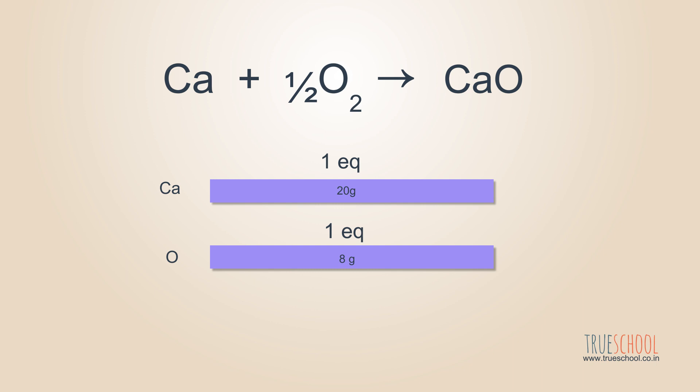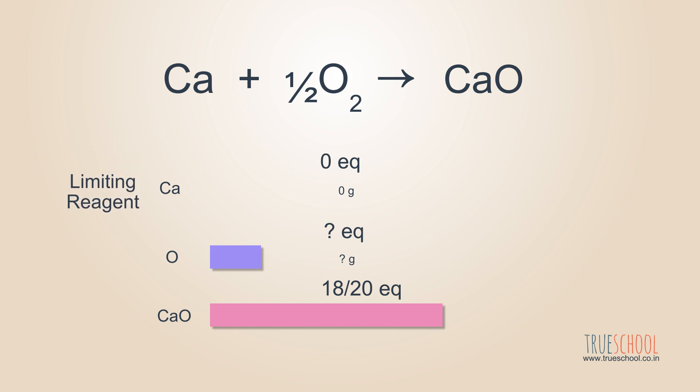But what if they are not in 20 is to 8 proportion? What will happen if Calcium was only 18 grams and Oxygen was 8 grams? In this case, Calcium is not sufficient to consume total 8 grams of Oxygen, and at the end of reaction, some amount of Oxygen will be left unreacted.